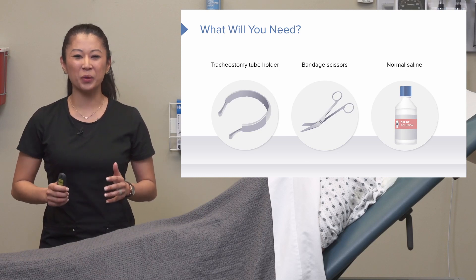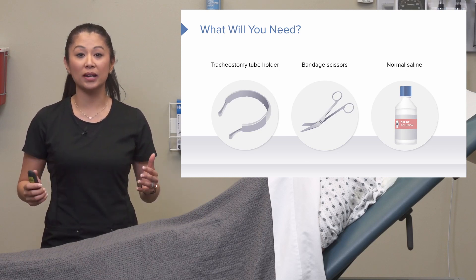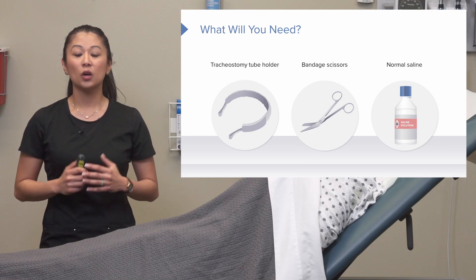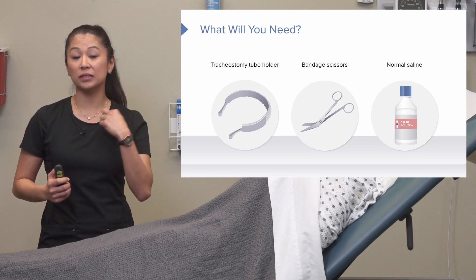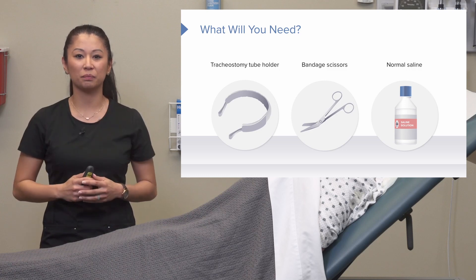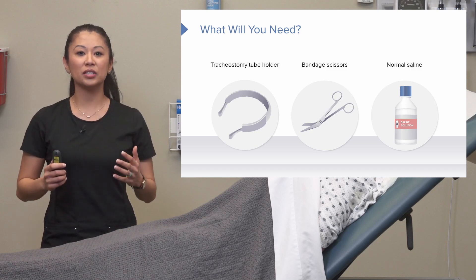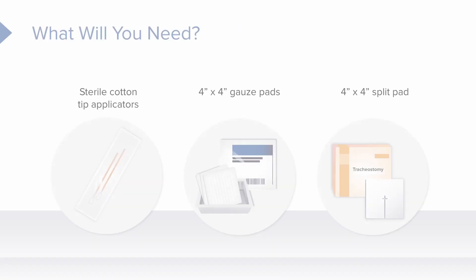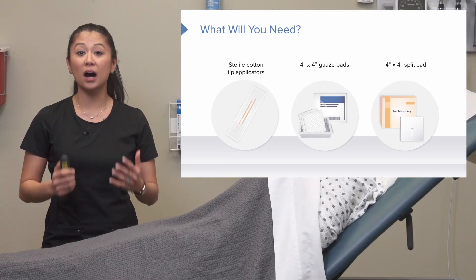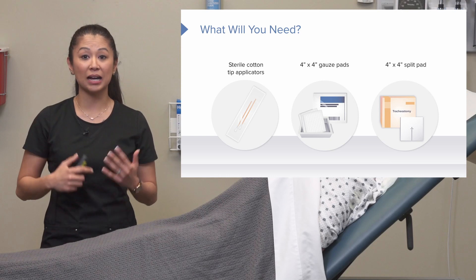Now let's look at the equipment we need for routine trach care. We need the holder that fixes around the patient's neck on the back side to hold it in place, bandage scissors, and normal saline. Sometimes you need to get really close and all around the stoma site, so we use sterile cotton tip applicators. We'll also use four-by-four gauze pads to clean around the site.